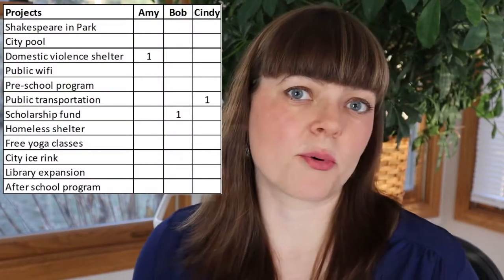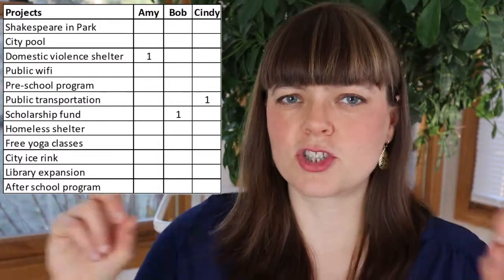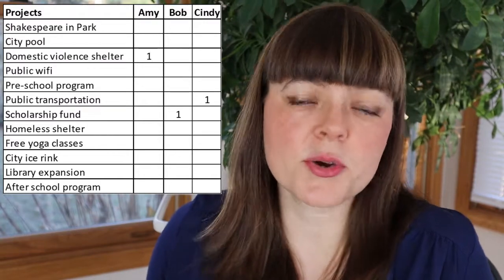In the one-person-one-vote scenario, each person casts a vote for their favorite thing. Bob votes for the scholarship, Cindy votes for public transportation. Amy has a dilemma since there are two things she values but she only gets one vote, so she chooses the domestic violence home. With $100 to allocate, we could divide it equally — $33 to each cause — or give all money to the winner. It's equitable in terms of the power each person has to influence the money.